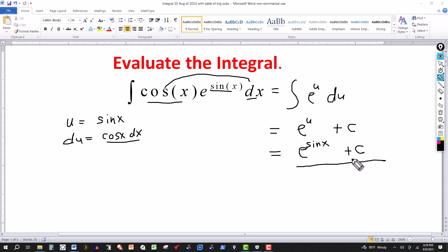And this one is pretty straightforward to check the answer by computing the derivative. The derivative of a constant, of course, is zero. The derivative of an exponential is the exponential, which is the sine of x. And then using the chain rule, it's the derivative of the exponent in this case. And that's the derivative of sine of x is cosine.